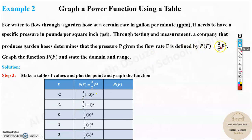Put this in this function. It'll be 3/2 times -2 squared, 3/2 times -1 squared, 3/2 times 0 squared, 3/2 times 1 squared, and 3/2 times 2 squared. Put the values in the calculator, solve. You're going to get these values.